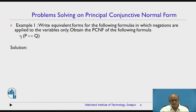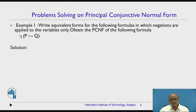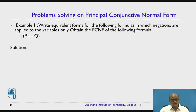The first problem statement: write equivalent forms for the following formulas in which negations are applied to the variables only. Obtain the principal conjunctive normal form (PCNF) of the following formula. The formula is negation of bracket P biconditional Q.